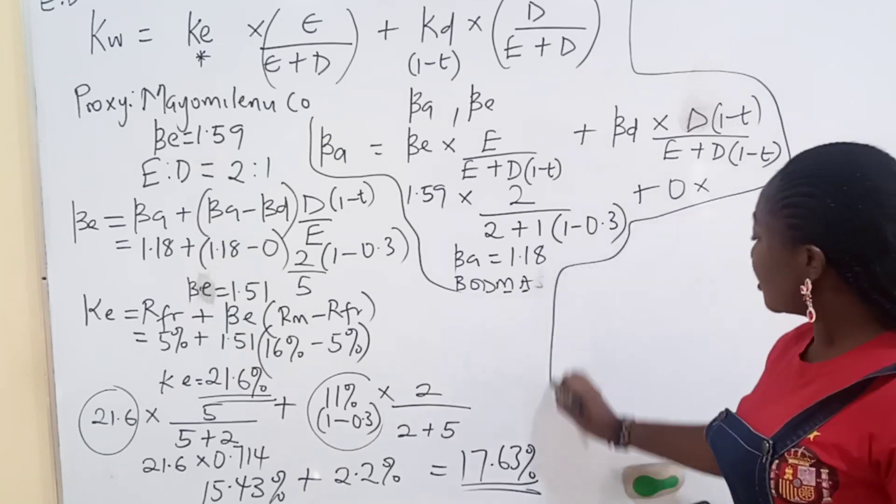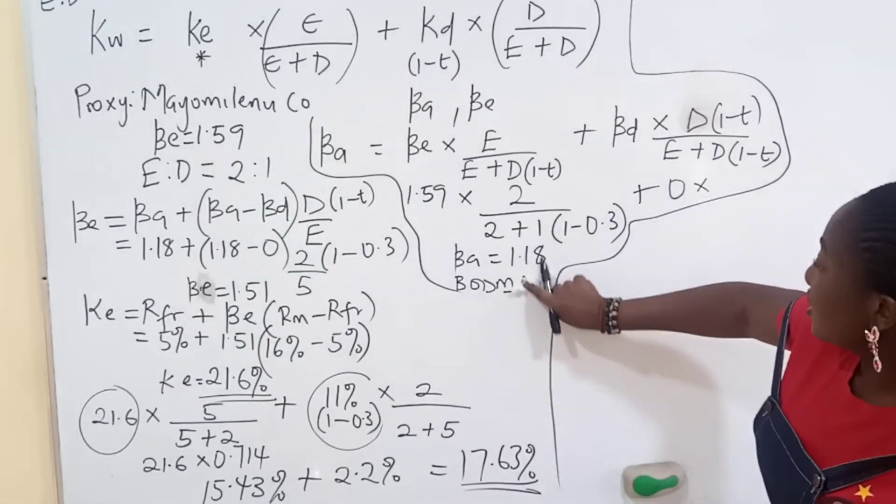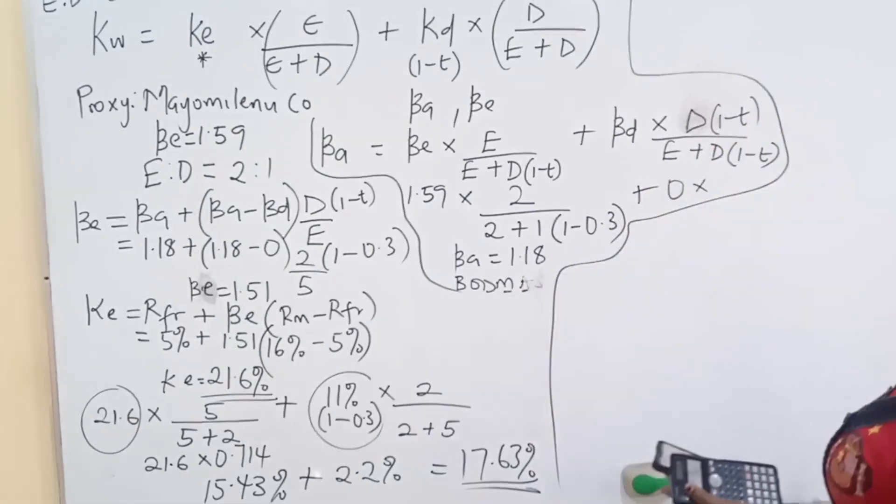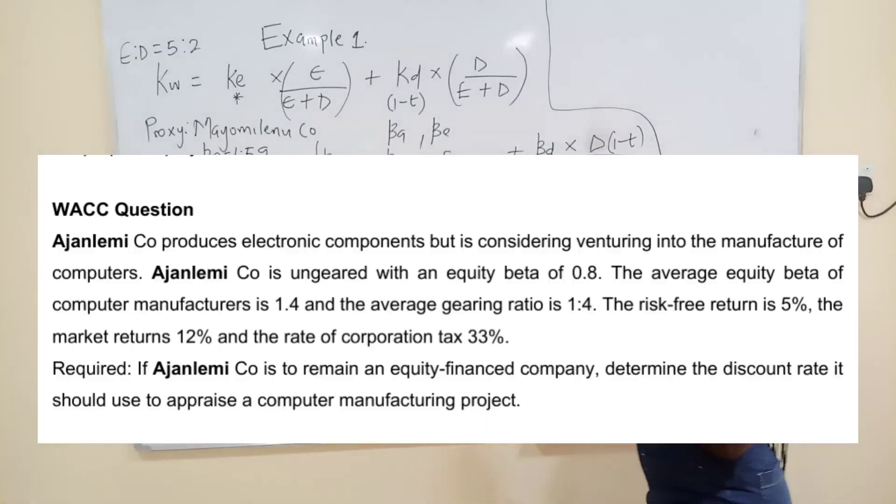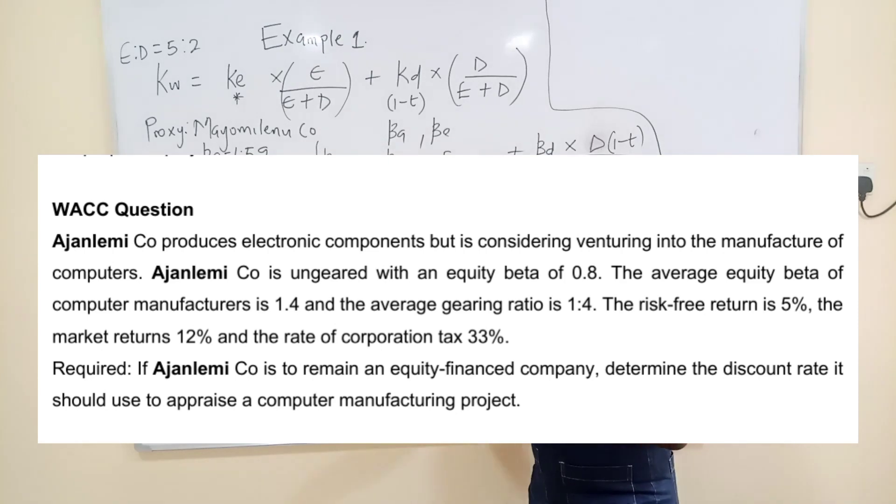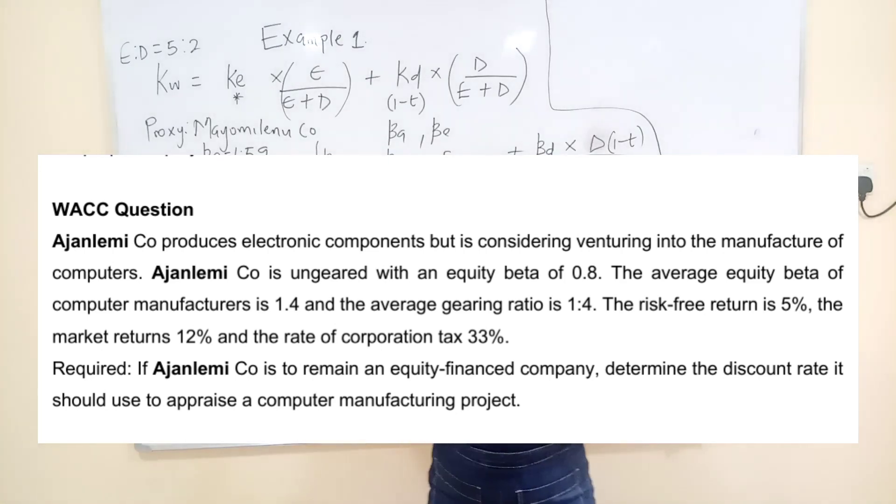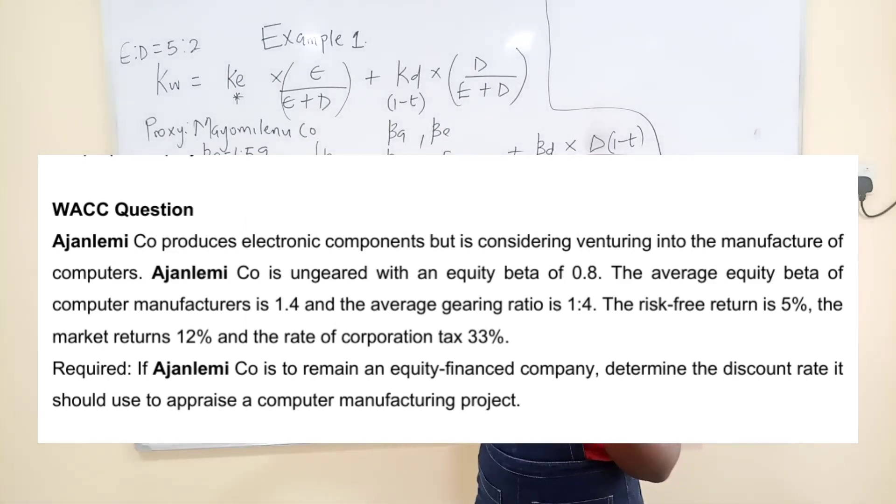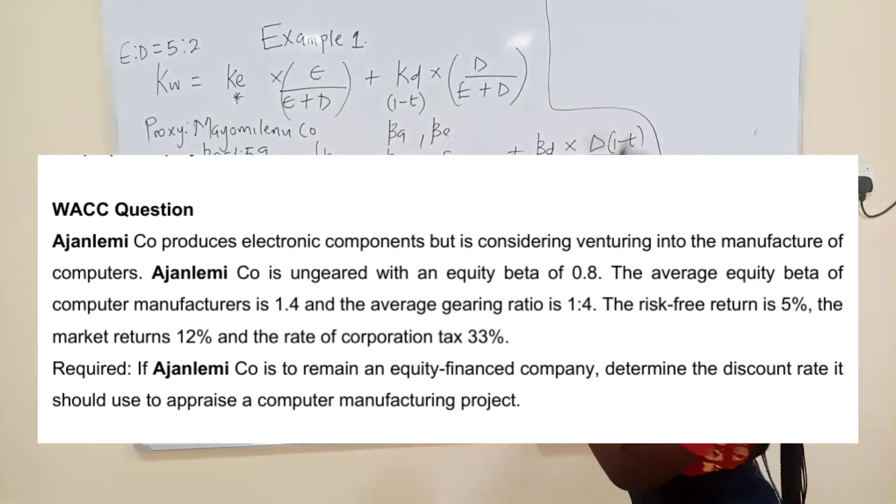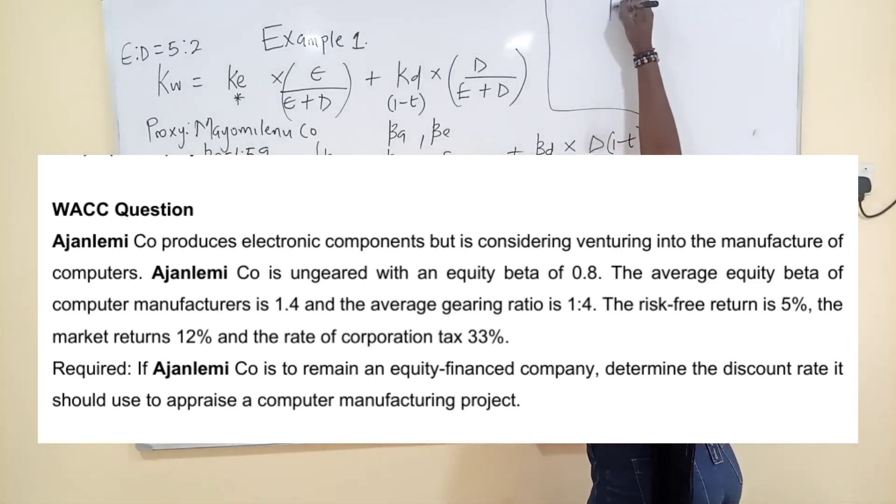So let's try and solve this question again. This thing is very difficult to wipe. It's difficult to wipe. So let me just use here, clean everything. Of course. So this one says Agileme Co. produces electronic components, but it is considering venturing into the manufacture of computers, new line of operation. Agileme Co. is ungeared, that it doesn't have debt element in it, with equity beta of 0.8.